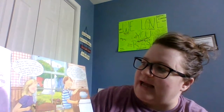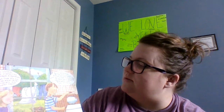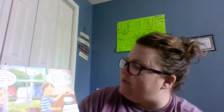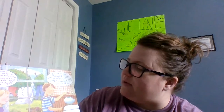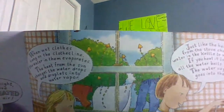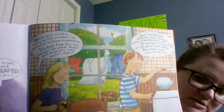Next it says when wet clothes hang on the clothesline, the water in them evaporates. The heat from the sun changes the water drops and droplets into water vapor — just like the heat from the stove changes water in the kettle to water vapor. If you heat it long enough, all the water boils away and the water vapor goes into the air. We've talked about that before in our science class.